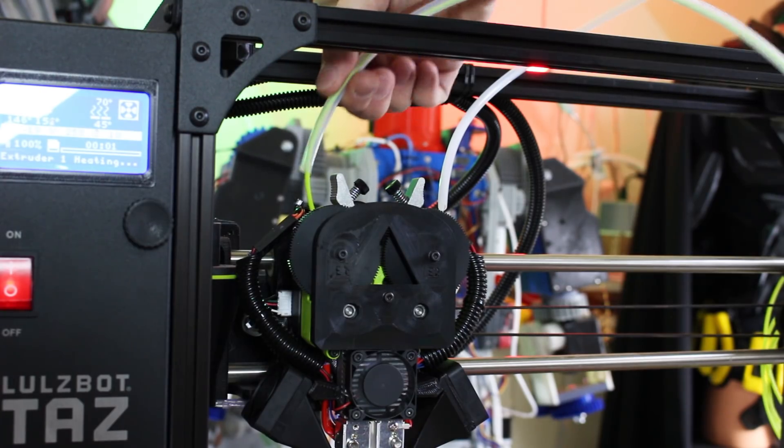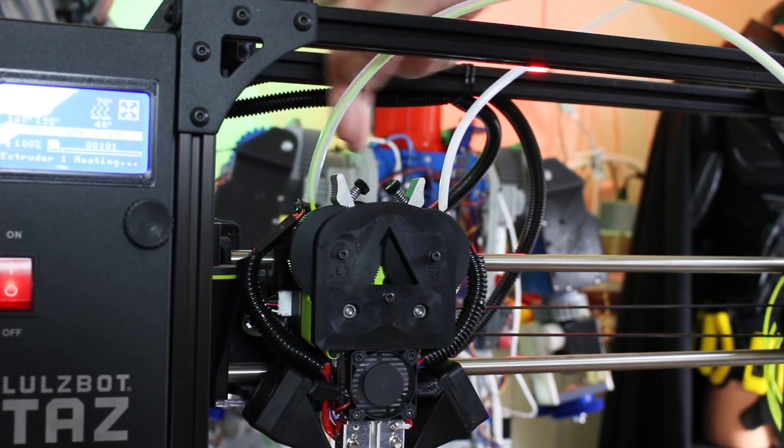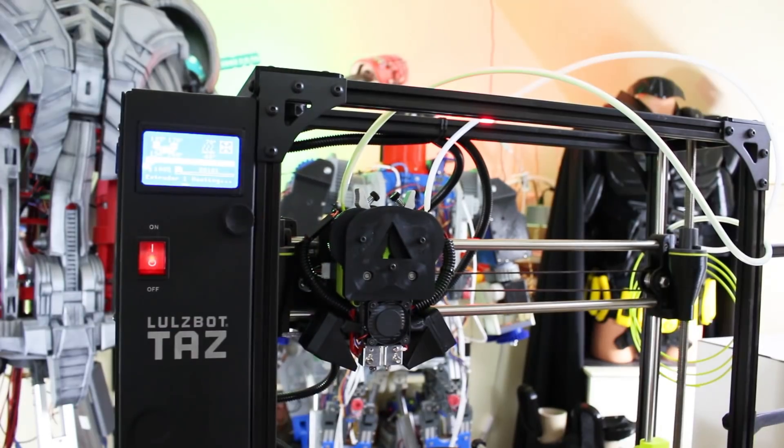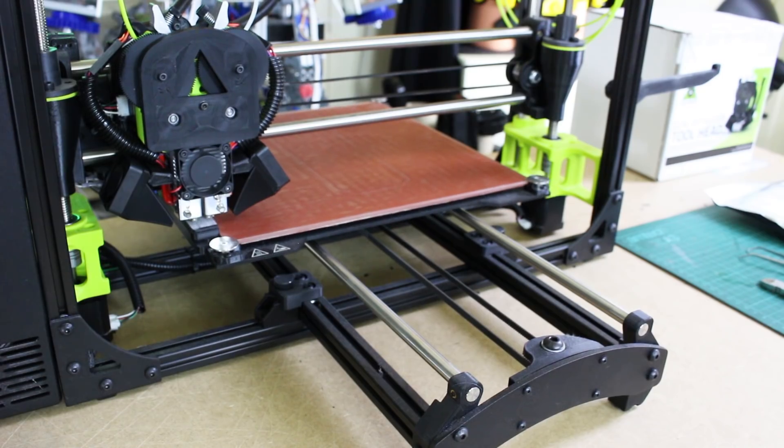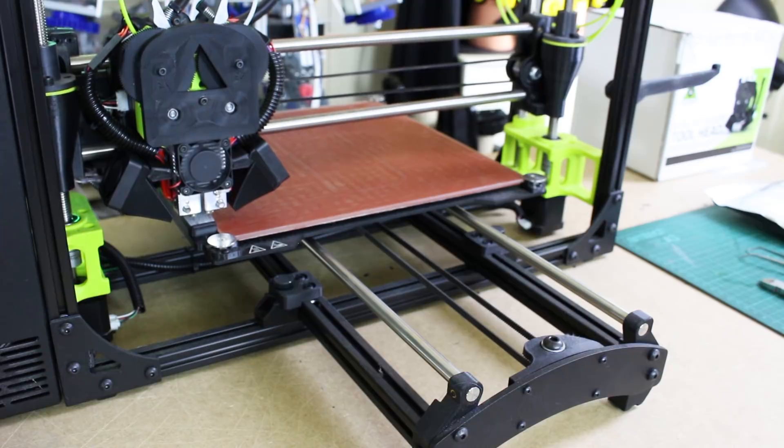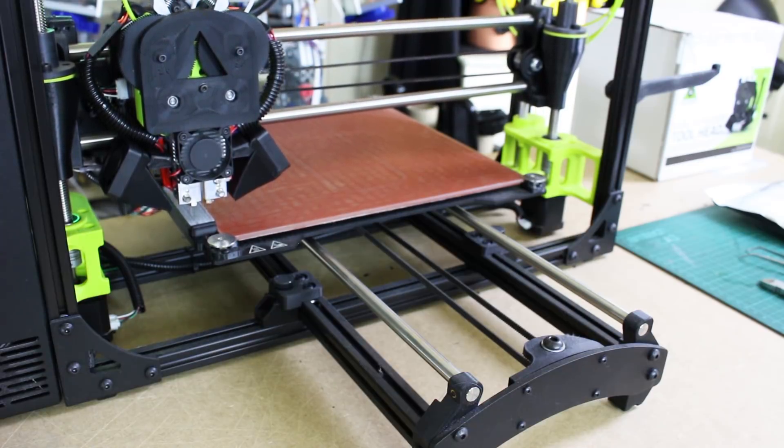So I've loaded my two filaments. We've got normal Lulzbot green PLA on the left and the water-soluble on the right, and the printer is heating up and ready to go. So the printer is doing its wiping and leveling routine. It cleans the nozzles, and then it touches each corner to auto-level.